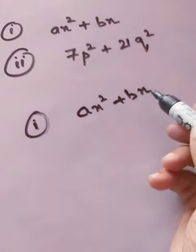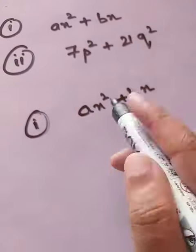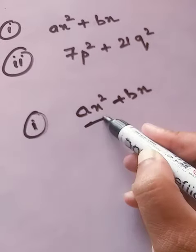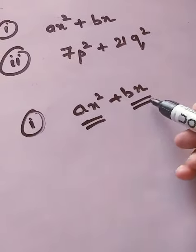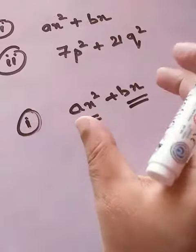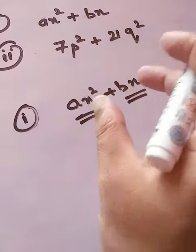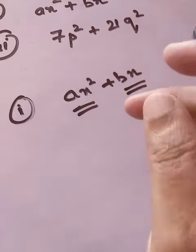So now again we have to take common. How many terms are given? Only 2 terms. The first term is ax square and the second term is bx. What is the thing that you see common in both the terms? It is x. Isn't it?